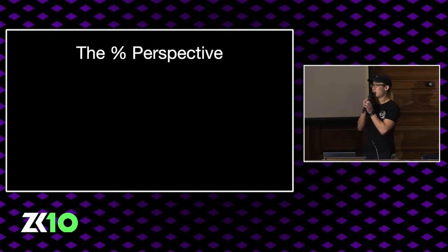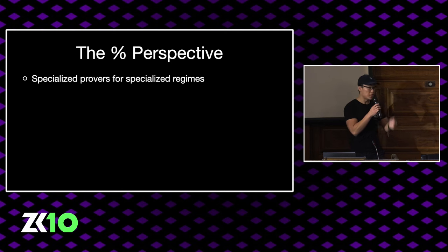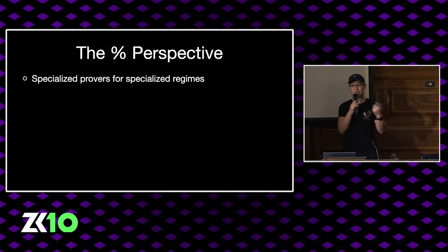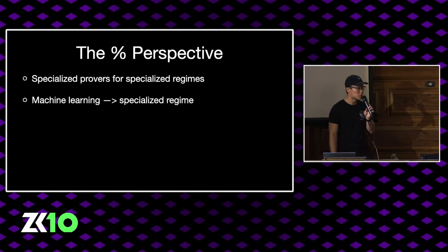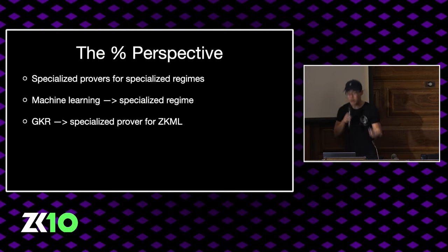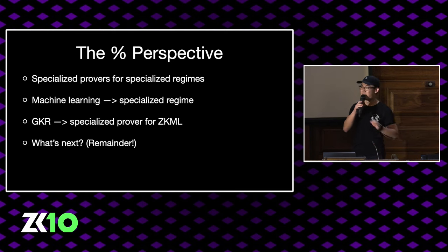This is the roadmap for the talk. If you ever get lost, don't worry, this roadmap will come back so you know exactly where we are. First, we believe there should be specialized provers for specialized computation regimes. We'll discuss GKR and why it's so cool and fast. And finally, we'll talk about what's next in store — hint, hint — it's our implementation, Remainder.